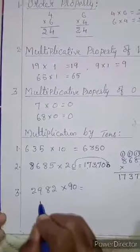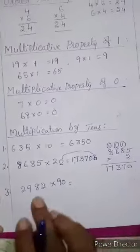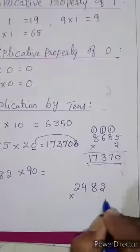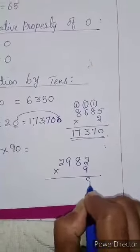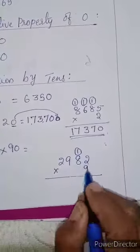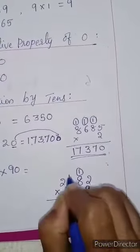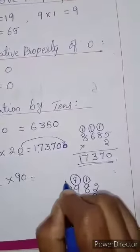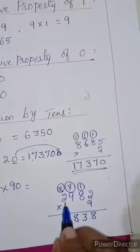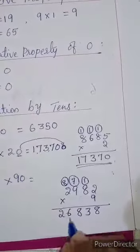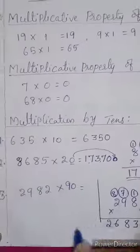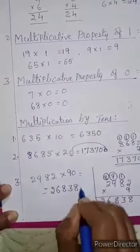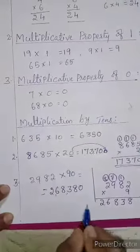Next question: 2,982 multiplied by 90. You will multiply this number by 9 first. 9 into 2 is 18, write 8 and carry 1 above the 8. 9 into 8 is 72 plus 1 is 73, write 3 and carry 7 above the 9. 9 into 9 is 81 plus 7 is 88, write 8 and carry 8 above the 2. 9 into 2 is 18 plus 8 is 26. The answer is 26,838. Then add a 0 at the right side, so your answer is 2,68,380.